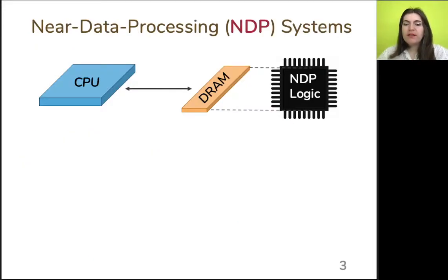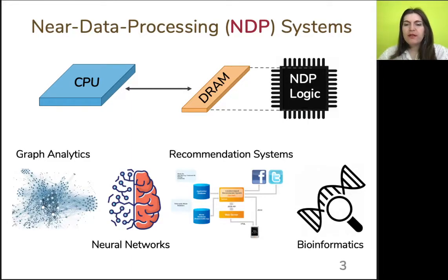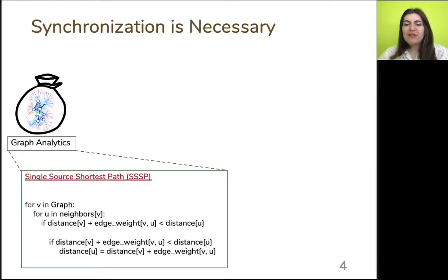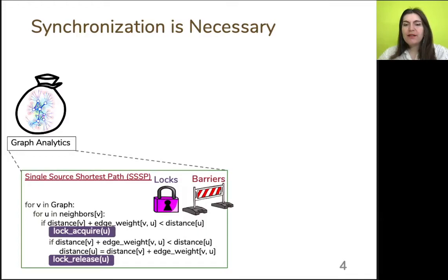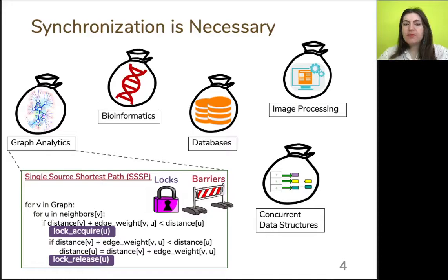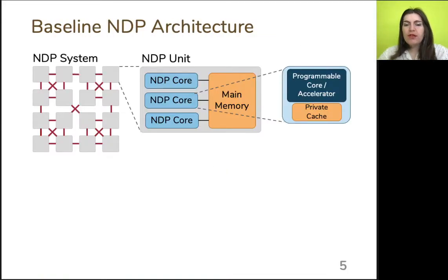Recent studies have greatly renewed interest in near data processing, or NDP. NDP architectures can improve performance and energy efficiency of a computing system by moving computation closer to the data and reducing data movement. Therefore, NDP architectures are quite attractive for a wide range of application domains. At the same time, synchronization primitives such as locks and barriers are widely used in many emerging applications, including graph analytics, databases, and many more application classes.